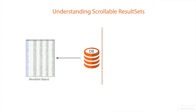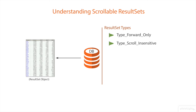We can have the following types of result set. TYPE_FORWARD_ONLY: if used, the cursor will always move in the forward-only direction. TYPE_SCROLL_INSENSITIVE: if used, the cursor can scroll forward and backward, and the result set is not sensitive to changes made by others to the database that occur after the result set was created.